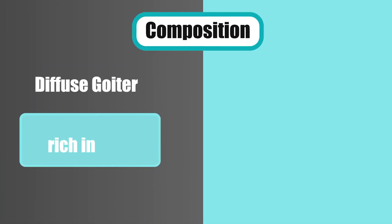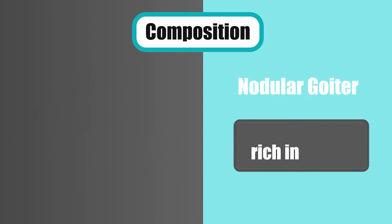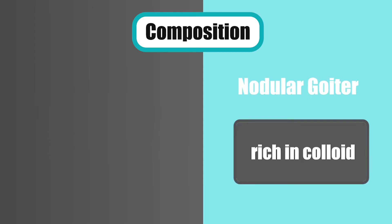Feature number four is composition. The composition of diffuse goiter is rich in cells, but in nodular goiter it is rich in colloid.